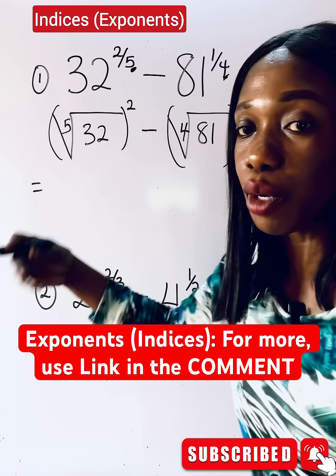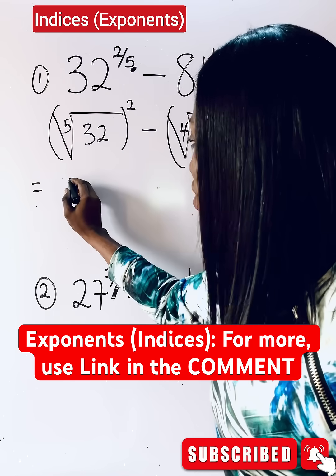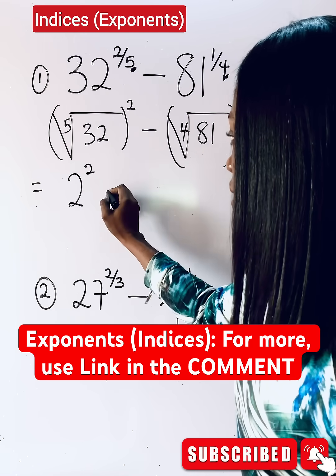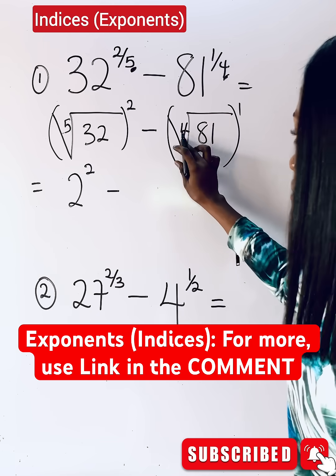fifth root of this means what number will you multiply five times to give you 32? And that number is two. You raise it to this power, minus. This one means what number will I multiply four times to give